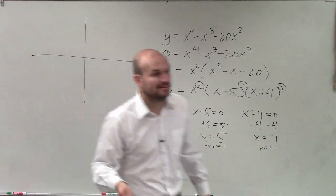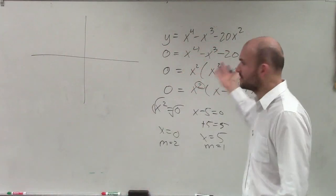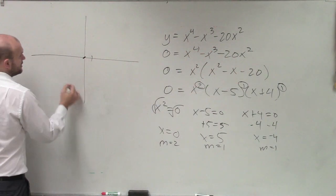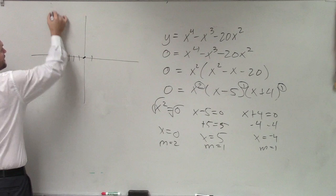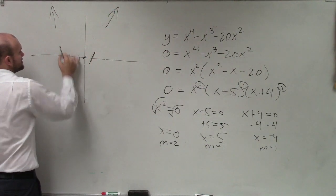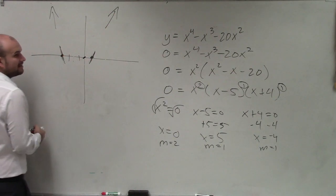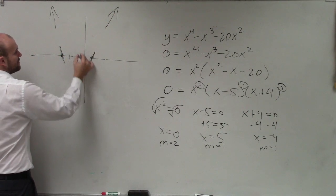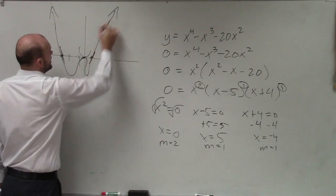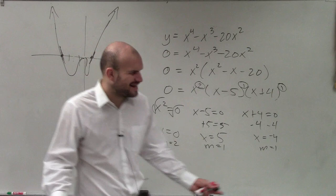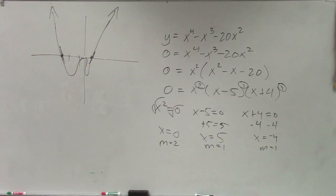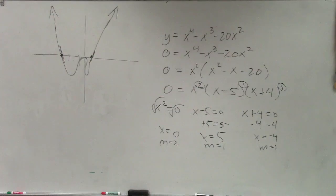With this information, you don't need a calculator to sketch the graph. You know the zeros, the end behavior, which zeros cross, and which touch and rebound. This is why multiplicity and end behavior are helpful - they allow us to understand what the graph looks like.